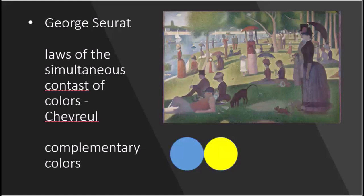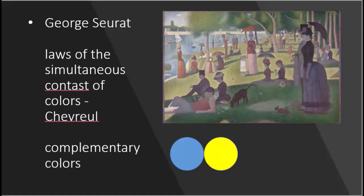Chevreul observed that adjacent objects not only cast reflections of their own color onto their neighbors, but also created the effect of their complementary color. When a blue object is set next to a yellow one, the eye will detect in the blue object a trace of purple — the complement of yellow — and in the yellow object a trace of orange, the complement of blue. Seurat's goal was to find ways to create such retinal vibration that enlivened the paint's surface.